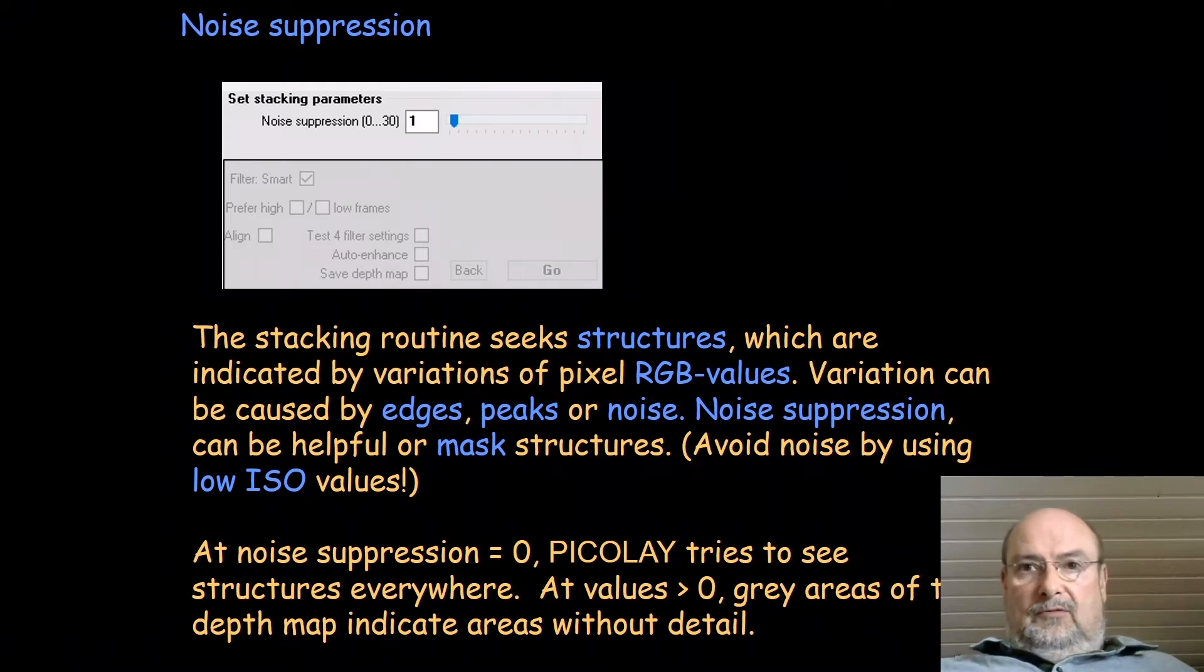We don't want to have noise and therefore noise suppression can be helpful. You should avoid noise by using low ISO values when you take the pictures. Noise suppression can also mask or hide structures if it's too strong and therefore we have to find the right value. The right settings depend on the picture you have. At noise suppression of 0, Picolet tries to see structure everywhere. At values above 0, grey areas might occur and these indicate areas without detail.